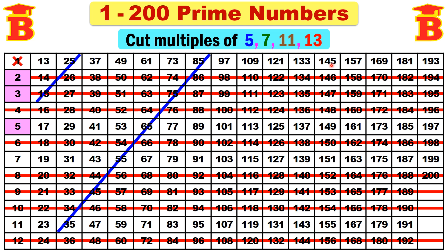Next number 145 — just cancel this full diagonal: 145, 135, 125, 115, 105, 95 — all numbers ending with 5, meaning divisible by 5, so we can cancel this. Next take this diagonal: 195, ending with 5, so in this diagonal we have 195, 185, 175, 165, 155. Now we have cancelled all the numbers divisible by 5.